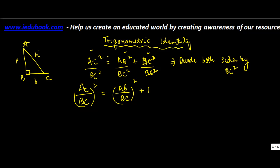Now what is AC upon BC whole square? We know that BC upon AC is what? BC upon AC is sin A. So AC upon BC will be what? Cosec A.